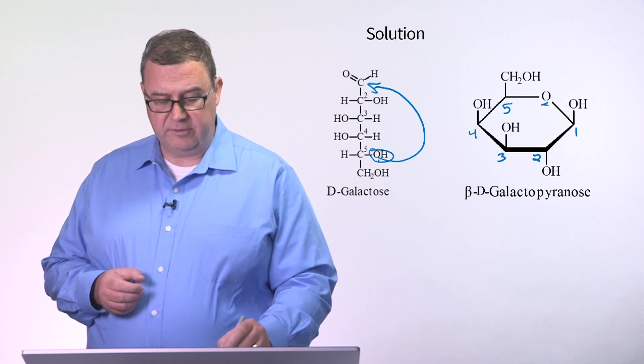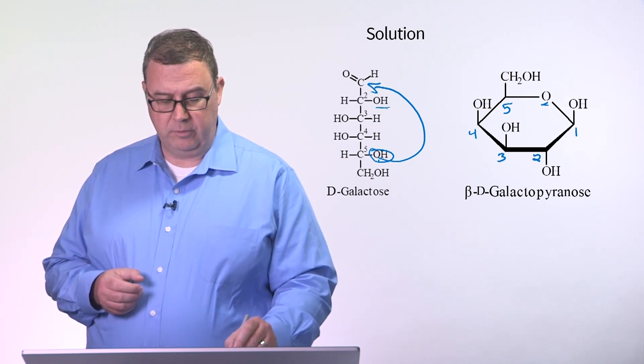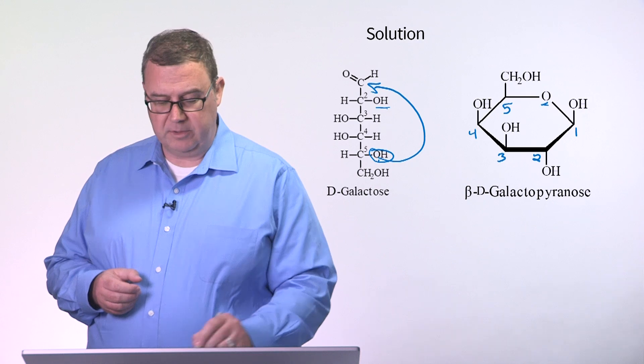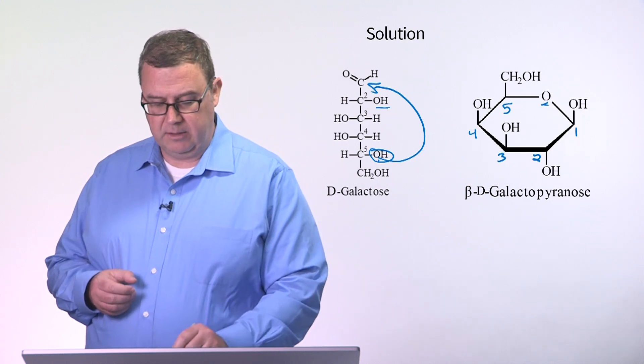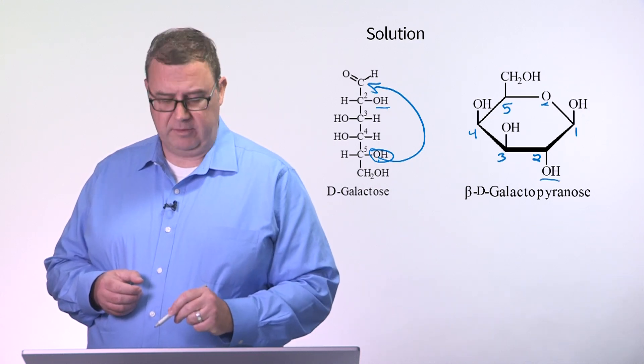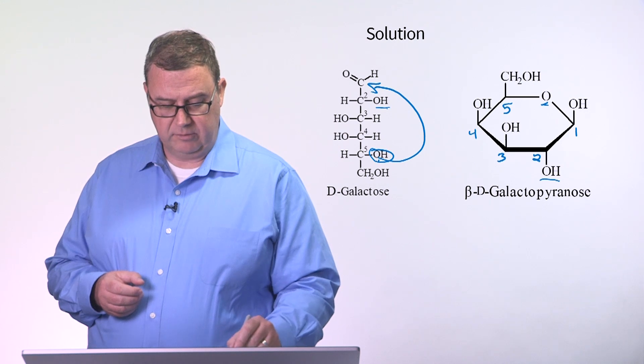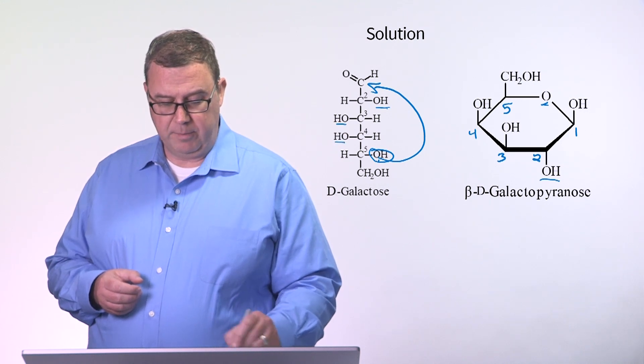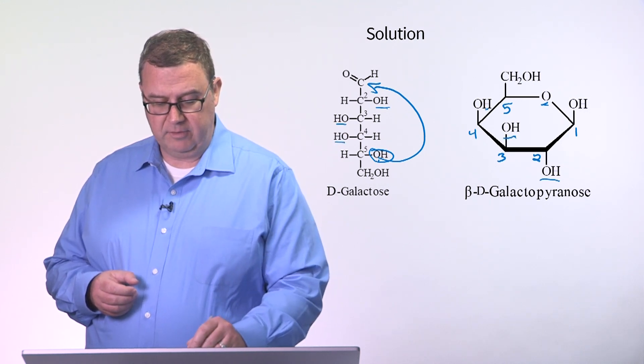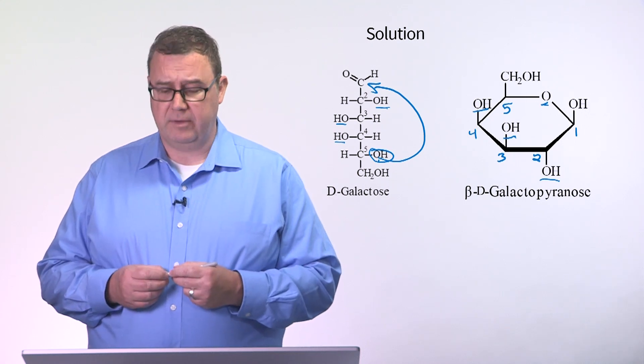If we look at the stereochemistry of the two, three, and four positions, we see the OH group in the two position is on the right, and here it's going to be on the bottom face of that ring, the alpha face. The three and four positions are going to be on the left, and they're going to be on the top face of that ring, or the beta face.